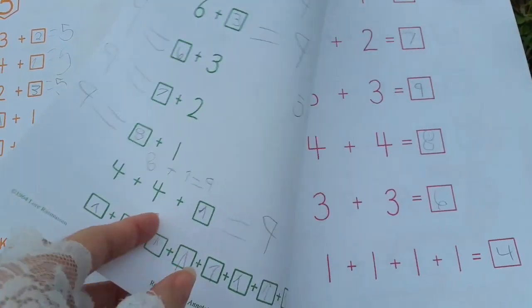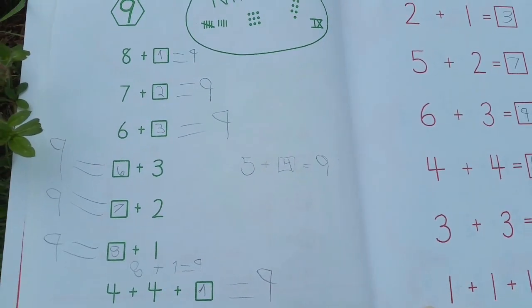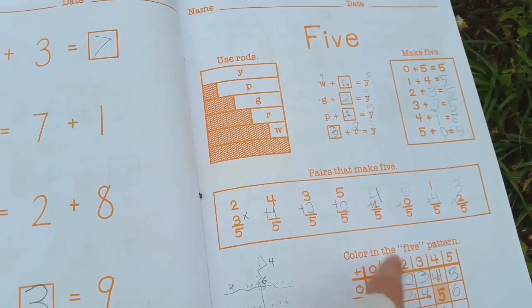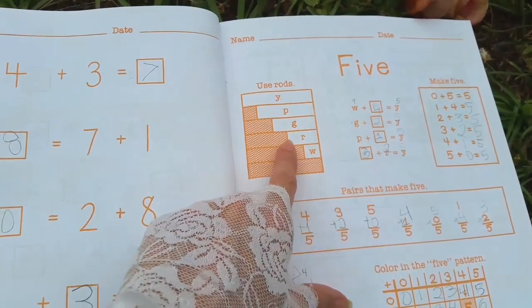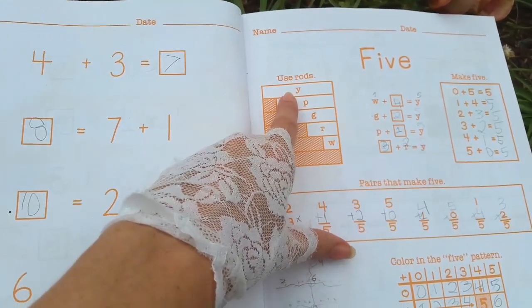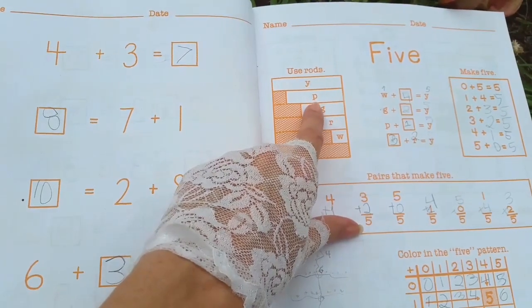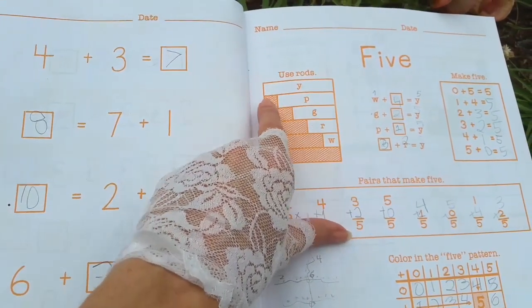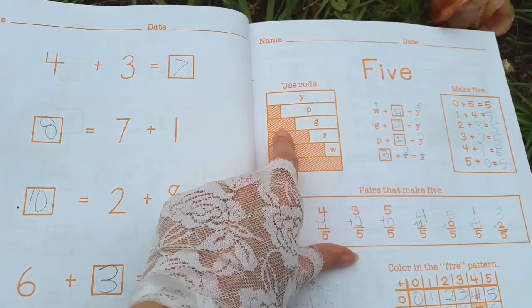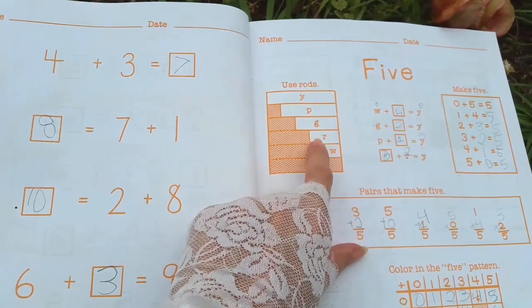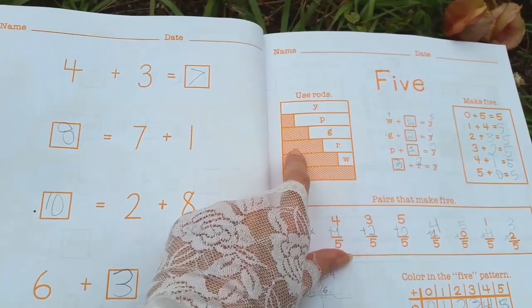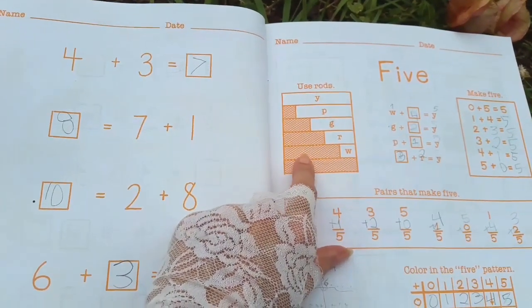And it's giving my daughter a lot more confidence and she's working through the problems very quickly. So in this page we explore different ways of making five and the rods are described using their color: white, red, green, purple, yellow. So yellow is the five rod, purple is the four rod and then there's a space for the one. Green is the three rod and there's the space for the two. And then R is the red rod which is two and there's the space for the green rod which is three.